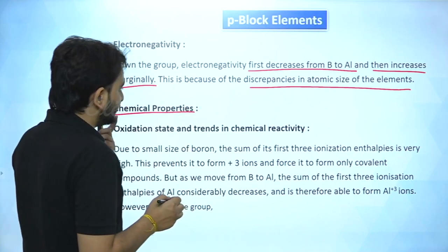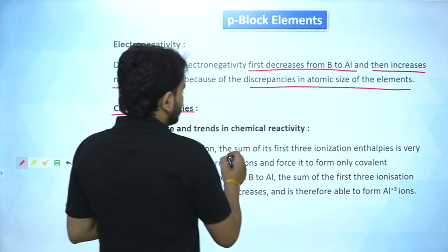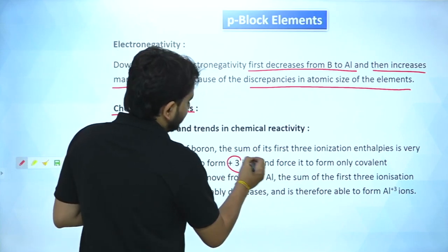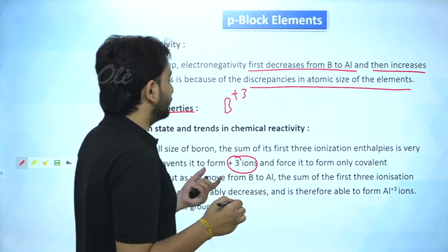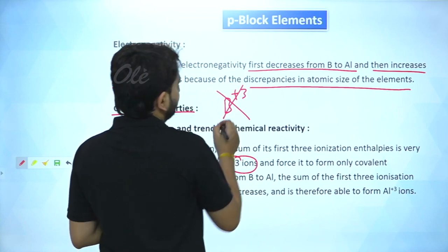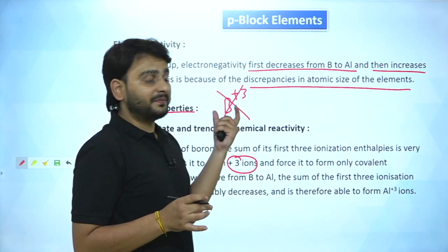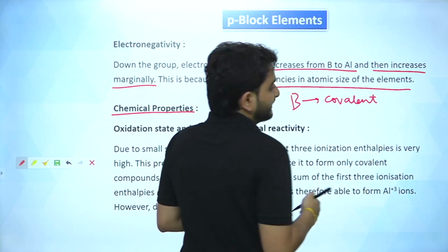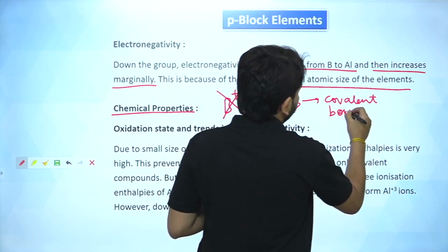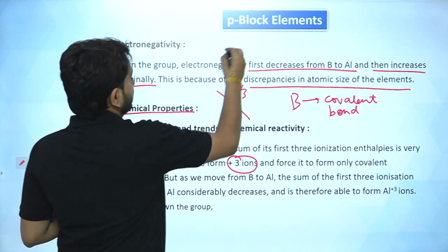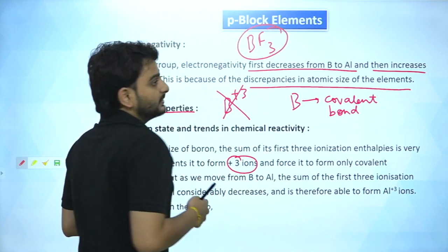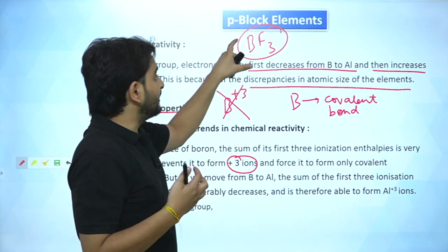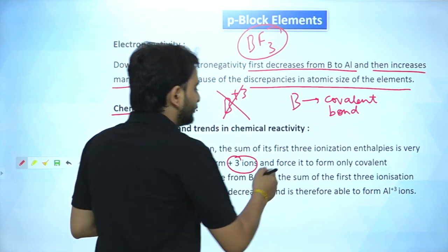Due to the small size of boron, the sum of its first three ionization enthalpies is very high, preventing it from forming B³⁺ ions and forcing it to form only covalent compounds. Boron cannot form ionic compounds — only covalent ones. For example, BF₃ (boron trifluoride) has covalent bonds and is well known as a Lewis acid in organic chemistry.